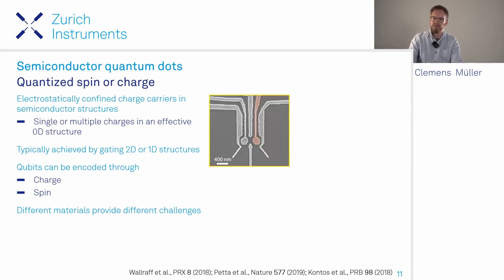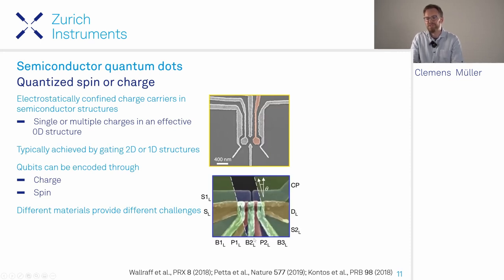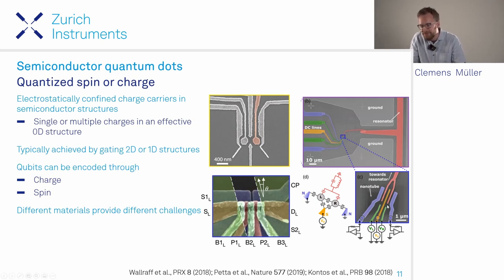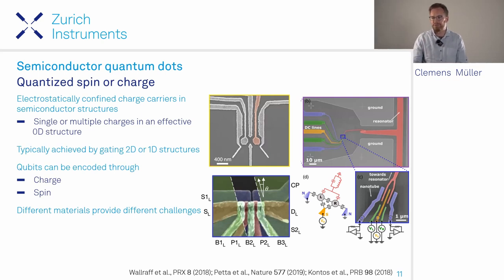Different semiconductor materials provide different challenges. I show examples of a gate-defined double quantum dot in a gallium arsenide 2D electron gas, a similar silicon-based structure that is much smaller due to the specific effective mass of charge carriers in silicon, and a double quantum dot based on a carbon nanotube—a one-dimensional structure where voltages applied to gates define the quantum dots.